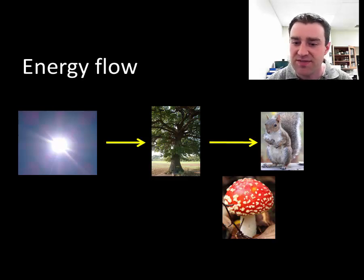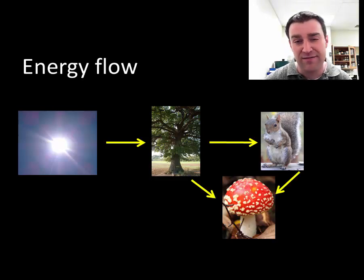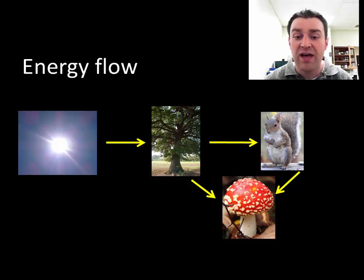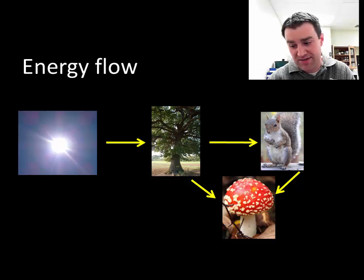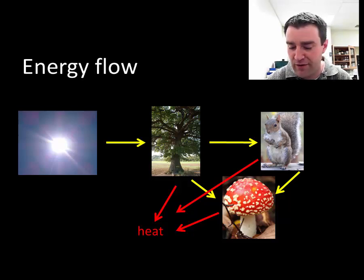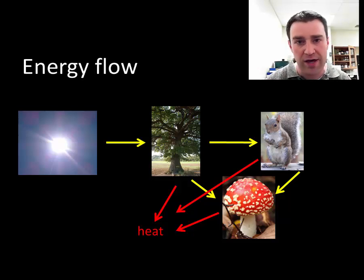Consumers can obtain energy from producers or from other consumers, and decomposers can make use of the biomass of dead organisms. Organisms are constantly spending energy as well, and whenever they transform the energy of biomass into the energy of ATP they also release heat energy that can't be recuperated — emphasizing a one-way flow of energy in ecosystems, which is why organisms constantly need to obtain more energy.